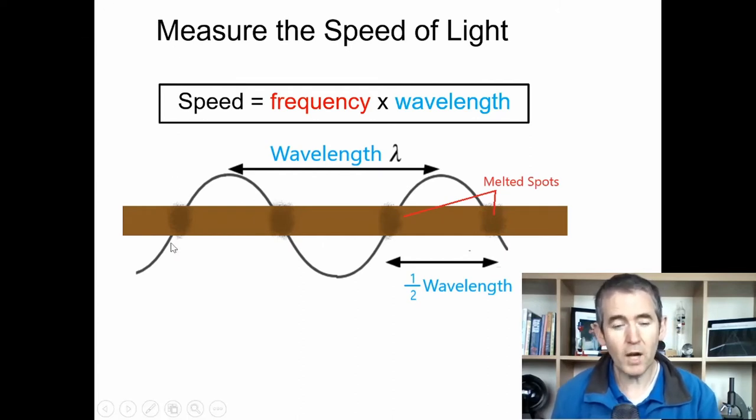You're going to find that certain parts of the bar of chocolate have melted and certain parts haven't. The distance between the melted spots, that is half a wavelength, it's not a full wavelength. You can see here by the diagram that a full wavelength is from the peak to the peak, but this is kind of the center of the wave, so that's half a wavelength.